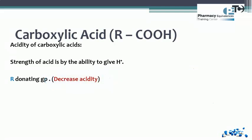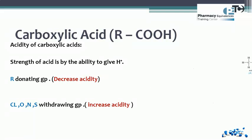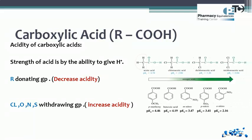On the other hand, chloride, oxygen, nitrogen, and sulfur are electron-withdrawing groups. They withdraw electrons from the adjacent carbon, allowing the carbon to more easily donate its hydrogen, which increases the acidity of the acid. So if we compare two carboxylic acids — one containing OH, NH, SH, or a halide (chloride, fluoride, or bromide) — those groups increase the acidity, while the acid without such groups will be less acidic.